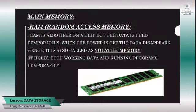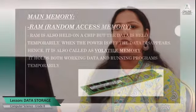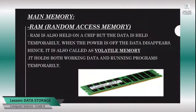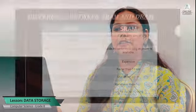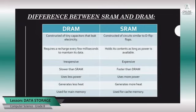Coming to random access memory: once you write contents to it and the power is off, the contents will get erased. So this is also known as volatile memory. It holds both working data as well as running programs, but only temporarily. There are two types of RAM: dynamic RAM and static RAM. In the next slide we will see the differences between static RAM and dynamic RAM.